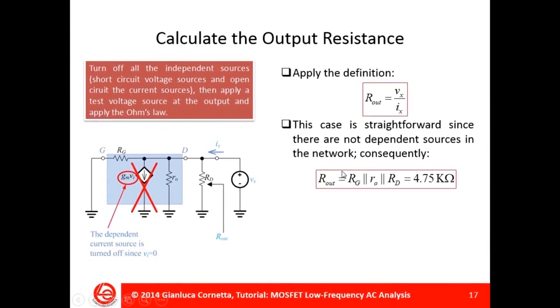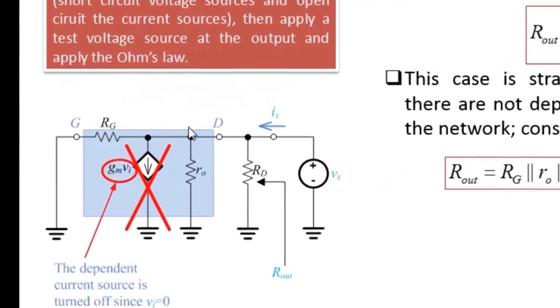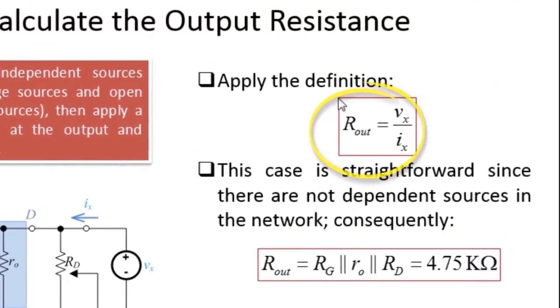To compute the output resistance, I have to turn off all the independent voltage sources in my circuit and apply a test voltage source Vx to the output of the amplifier. The output resistance can be computed as the relationship between the output test voltage Vx and the output test current ix.